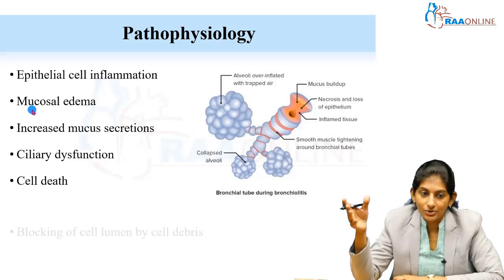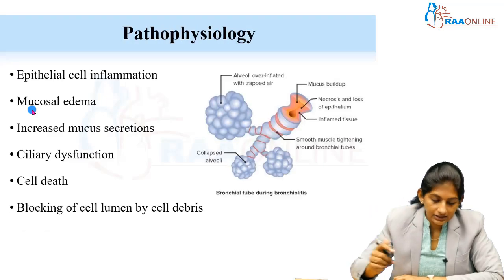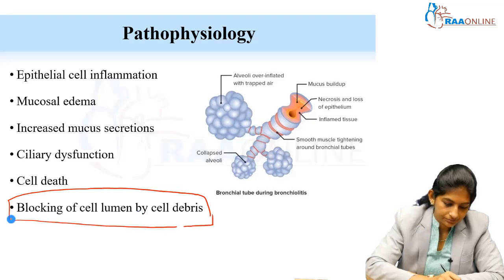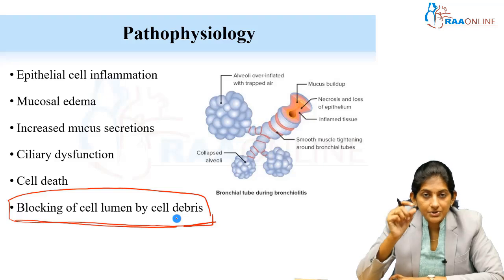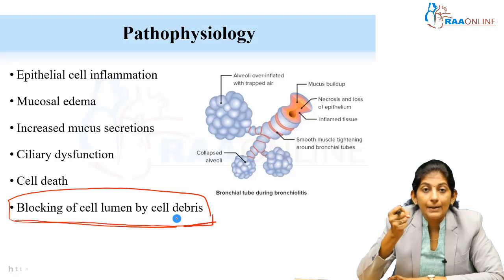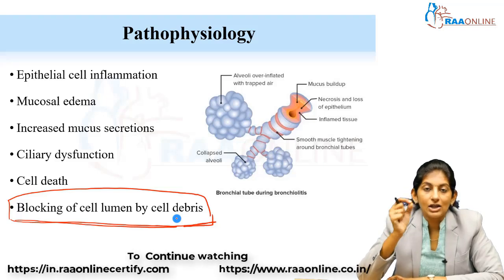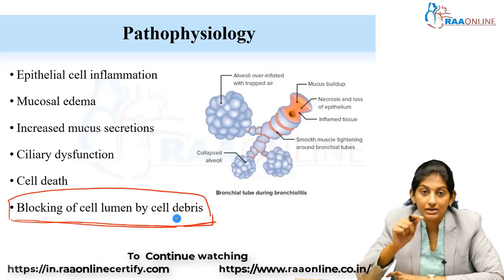One very important point to remember: in bronchiolitis, the lower airway obstruction does not happen due to bronchoconstriction — it happens due to cellular debris. The blocking of the airway lumen actually occurs due to necrotic cell debris. This point is critical to understanding which treatment modalities will work.